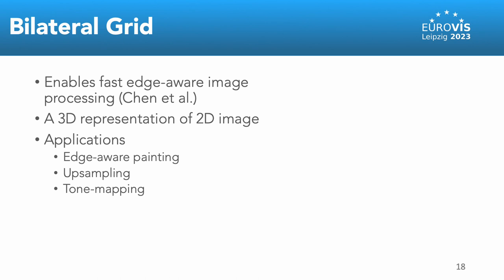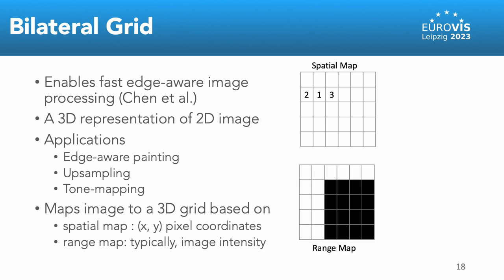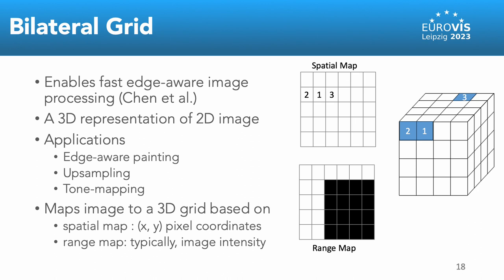The method has shown success in applications such as edge-aware painting, tone mapping, image stylization and many more. The grid is defined from a spatial map which corresponds to the pixel coordinates and a range map which is generally the image intensity. The pixels are projected onto a higher dimensional grid such that the pixels that are nearby in both spatial positions and intensities are close to each other.